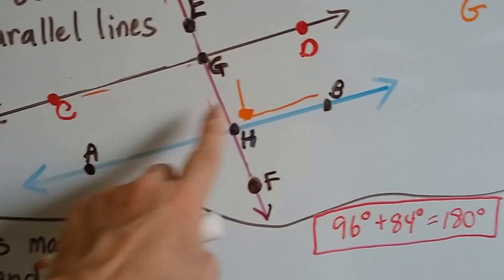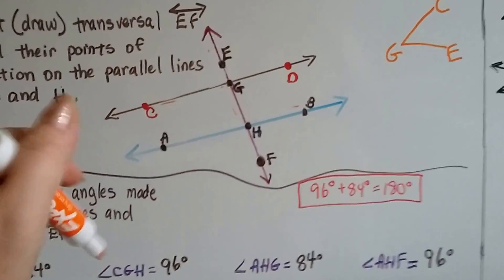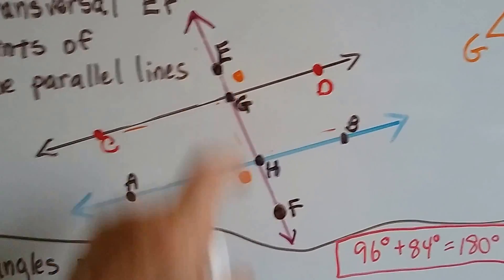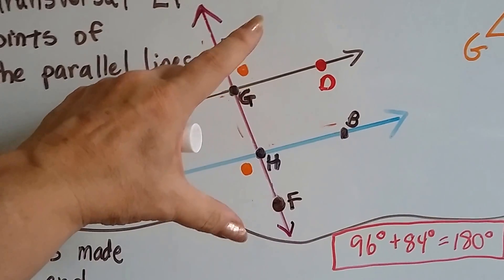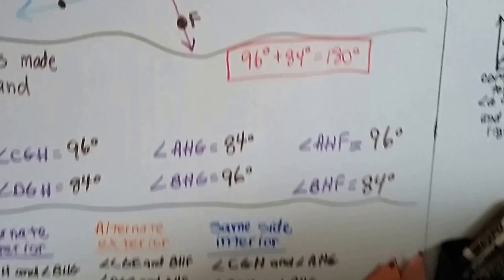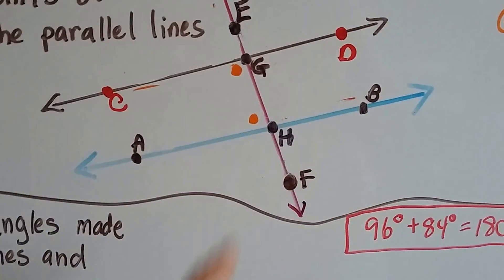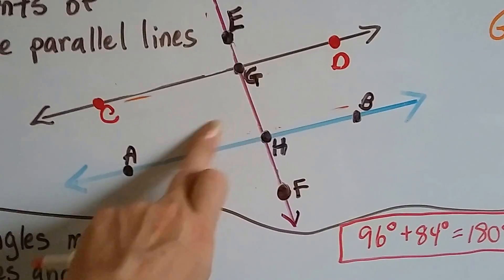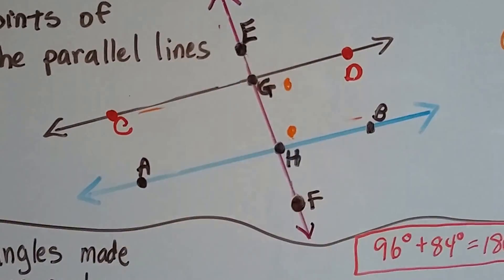Now where would alternate exterior angles be? Alternate exterior angles are going to be outside the parallel lines — like EGD and AHF. Those are alternate exterior angles on opposite sides of the transversal line and on the exterior of the parallel lines. Then we have same-side interior: those are on the same side of the transversal and on the interior of the parallel lines — there are two pairs, one here and one here.